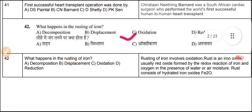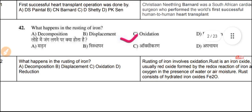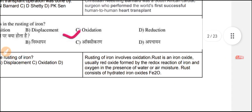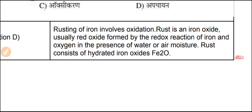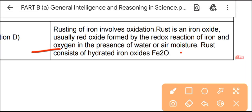Question 42: What happens during the rusting of iron? The answer is oxidation. Rusting of iron involves oxidation — rust is an iron oxide, usually a red oxide, formed by the redox reactions of iron and oxygen in the presence of water or air moisture. It consists of hydrated iron oxide (FeO₂).